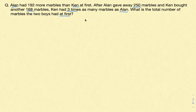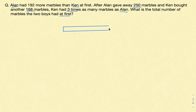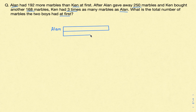Let's say the number of marbles Ellen is having is represented by this bar. This bar represents the number of marbles Ellen had at first — so this is Ellen. Now how about Ken? Since Ellen is 192 more than Ken, for Ken we need to draw another bar, but it should be shorter because Ken is having fewer than Ellen. So this one is for Ken, and we can see here that Ellen is 192 more than Ken.